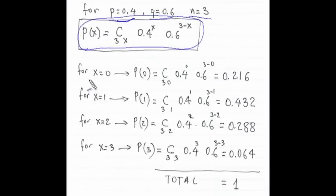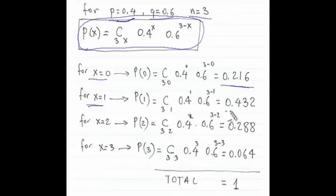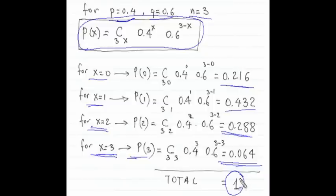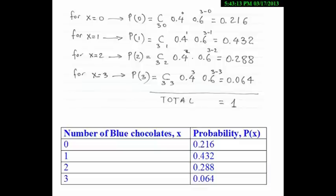For x equals 0, that means 0 successes — 0 blue chocolates and 3 non-blue chocolates. This gives a certain probability. For x equals 1, the probability of 1 success means 1 blue and 2 non-blue chocolates. For x equals 2, the probability of 2 successes means 2 blue and 1 non-blue chocolate. For x equals 3, the probability of 3 successes means 3 blue chocolates and 0 non-blue chocolates. When I add all those numbers, I get 1 because there is no other choice — the total probability must equal 1. The result is summarized in this table.